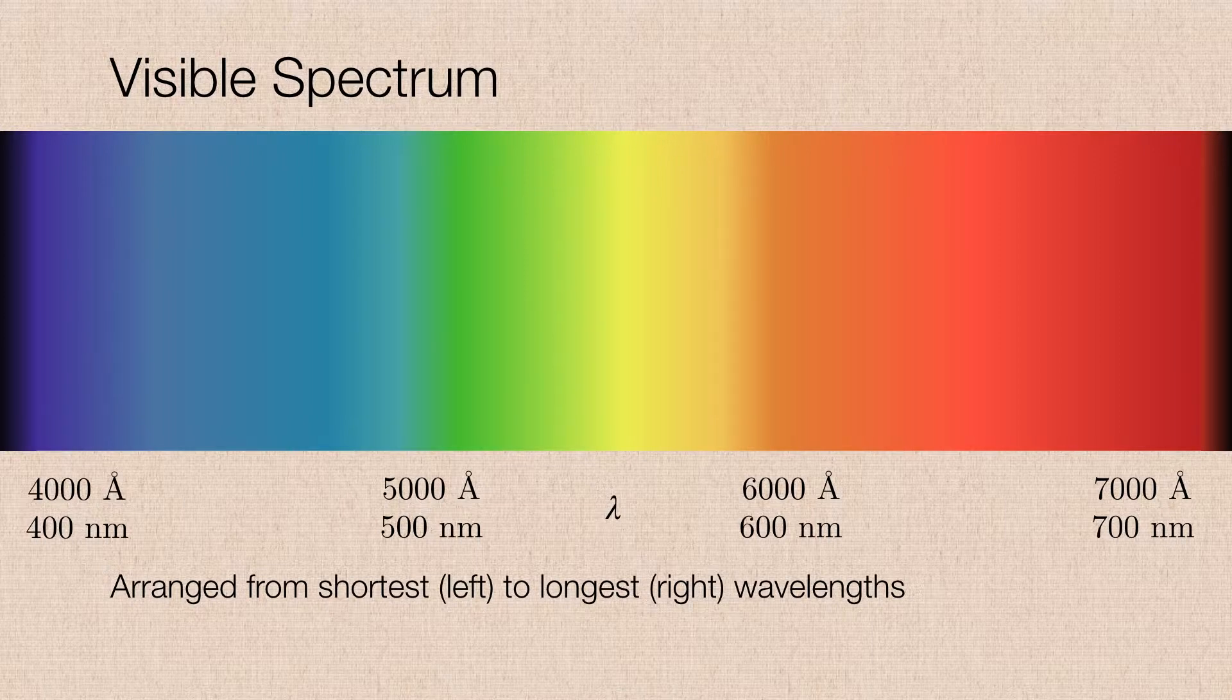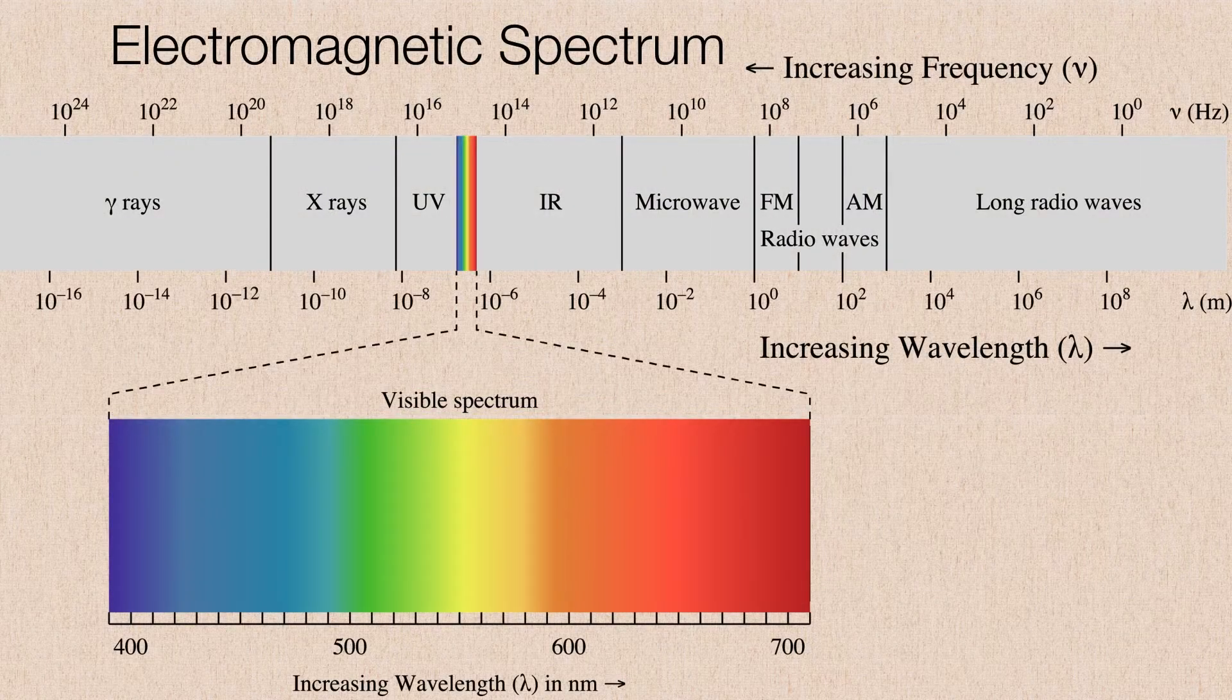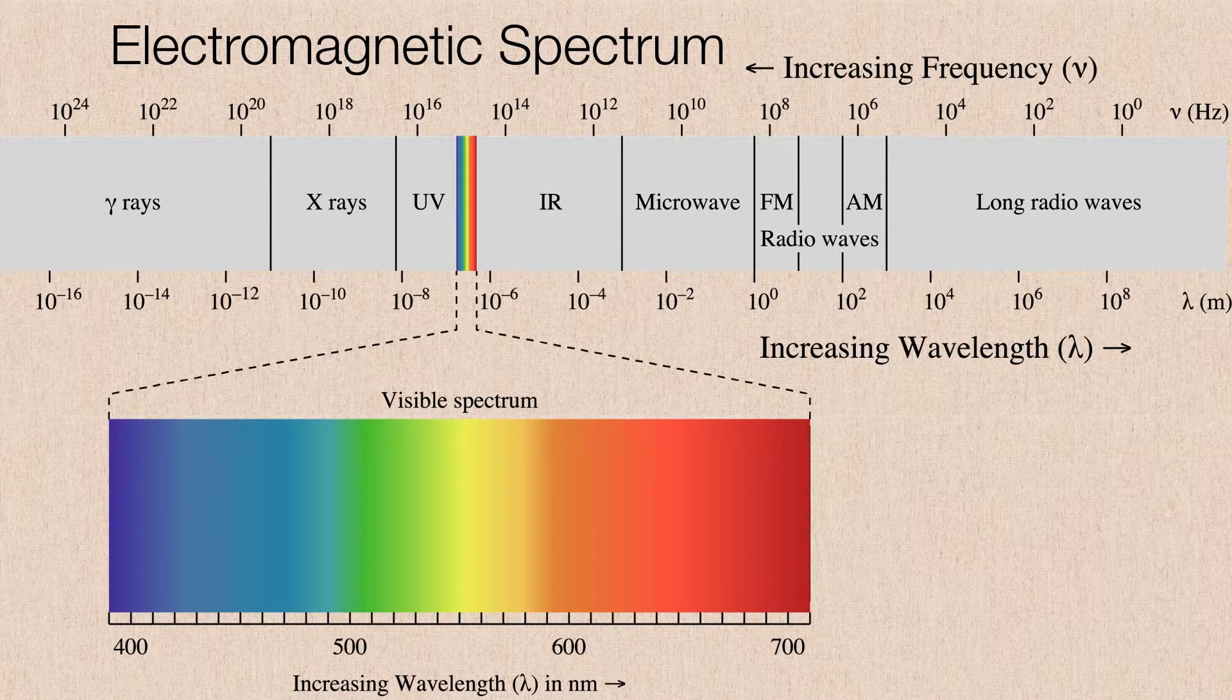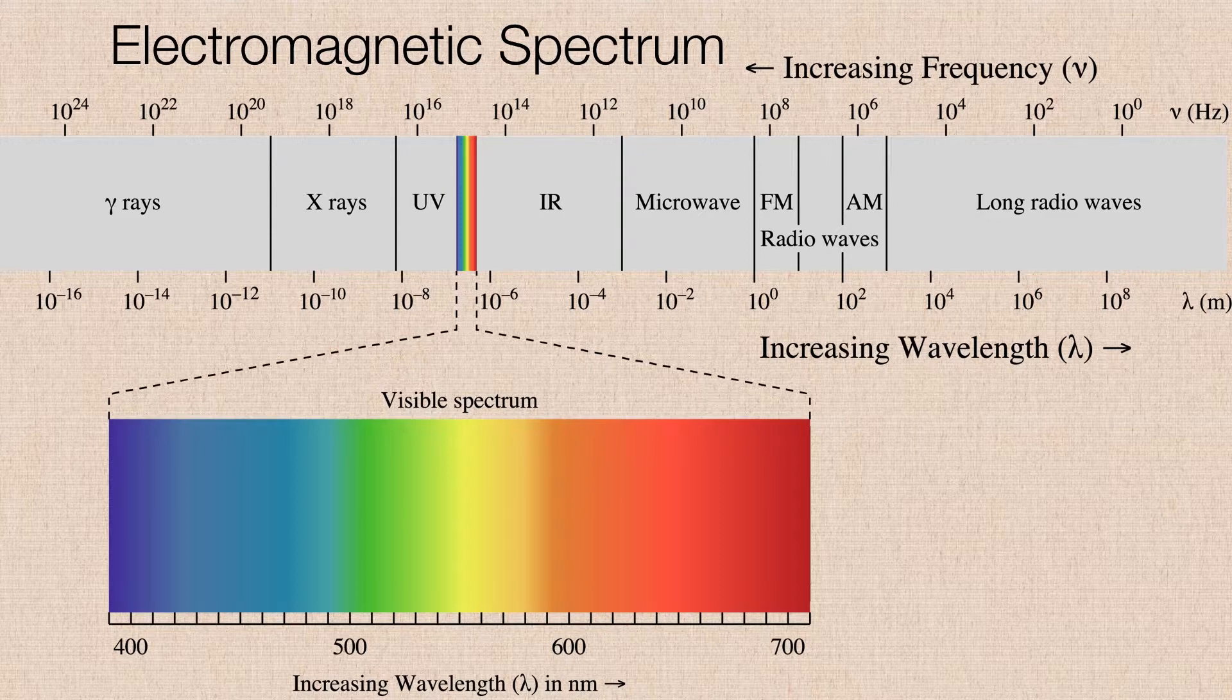So what we think of as the visible spectrum is just one part of an entire electromagnetic spectrum. And many of these forms of electromagnetic radiation should be familiar to you.